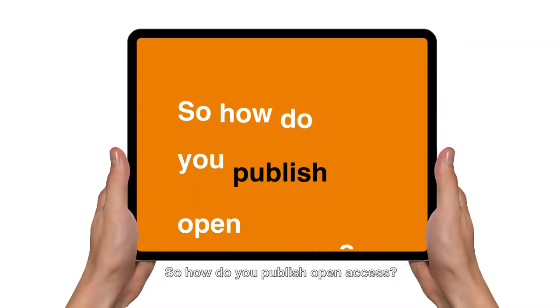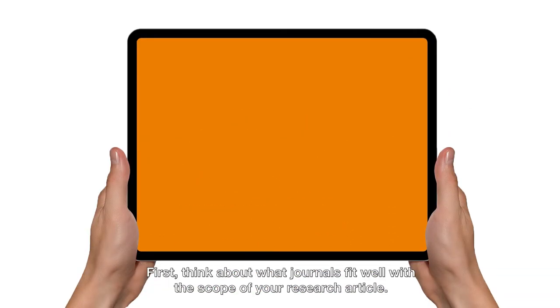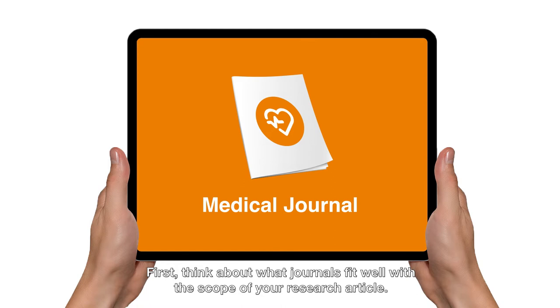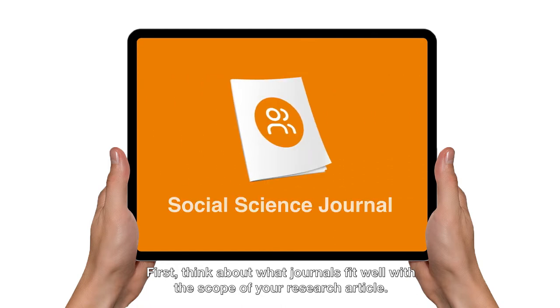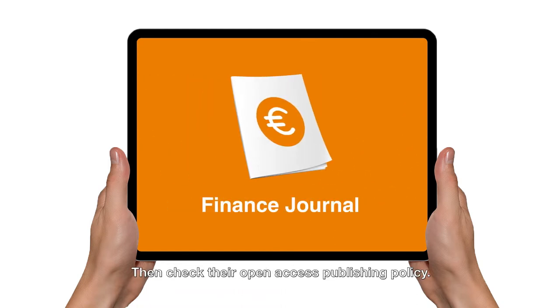So how do you publish Open Access? First, think about what journals fit well with the scope of your research article. Then check their Open Access Publishing policy.